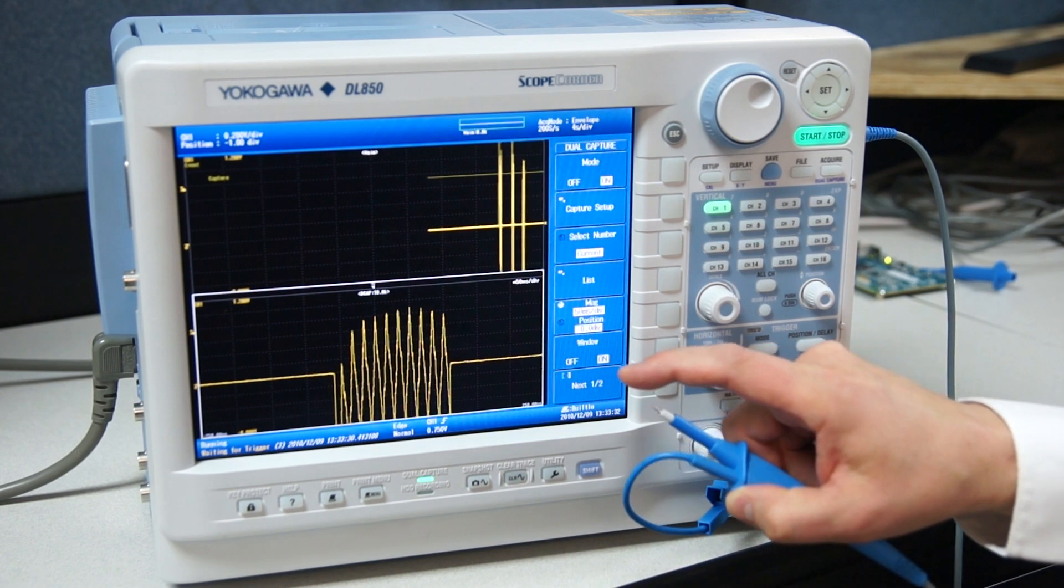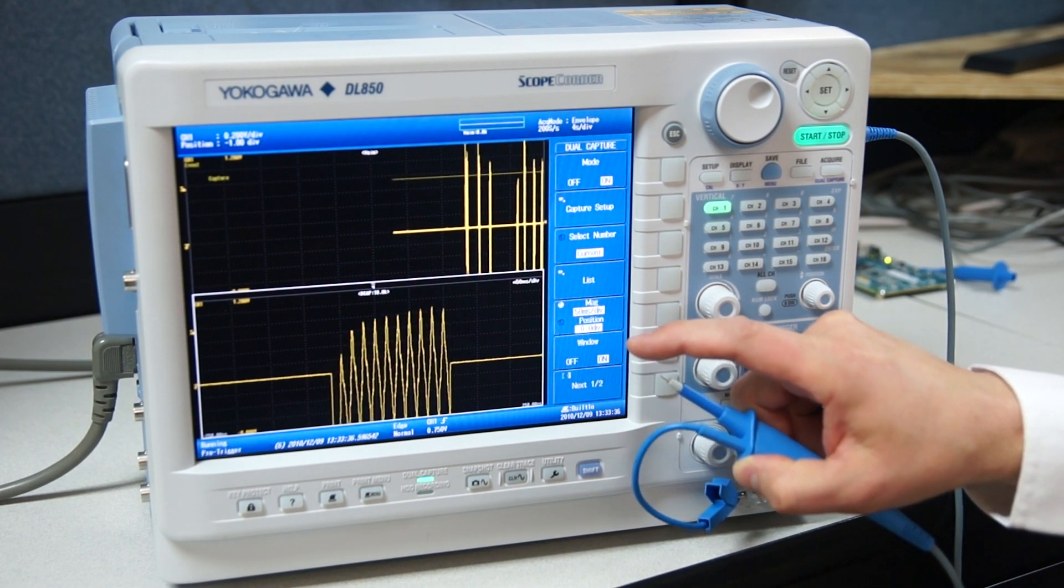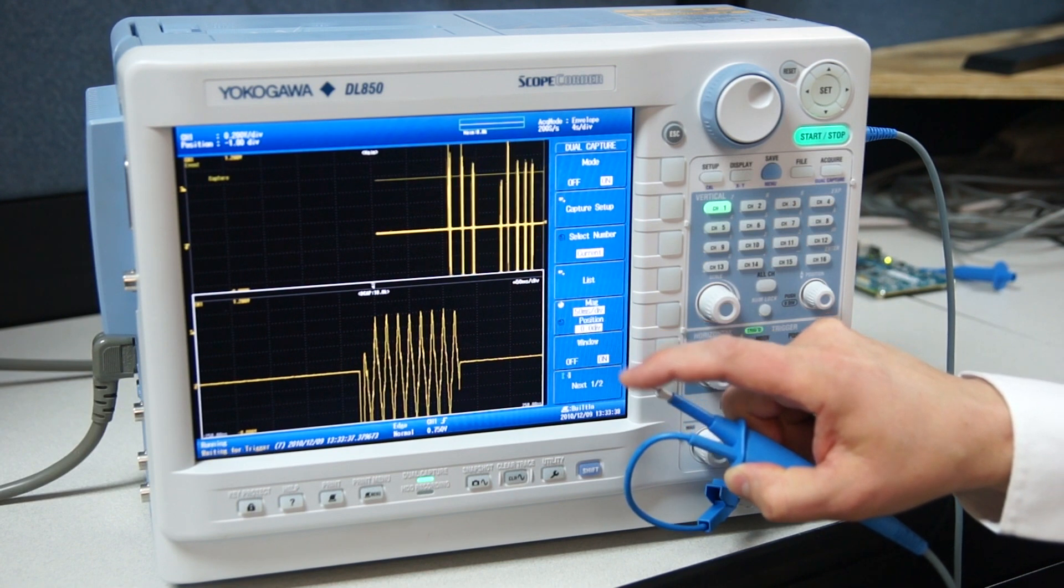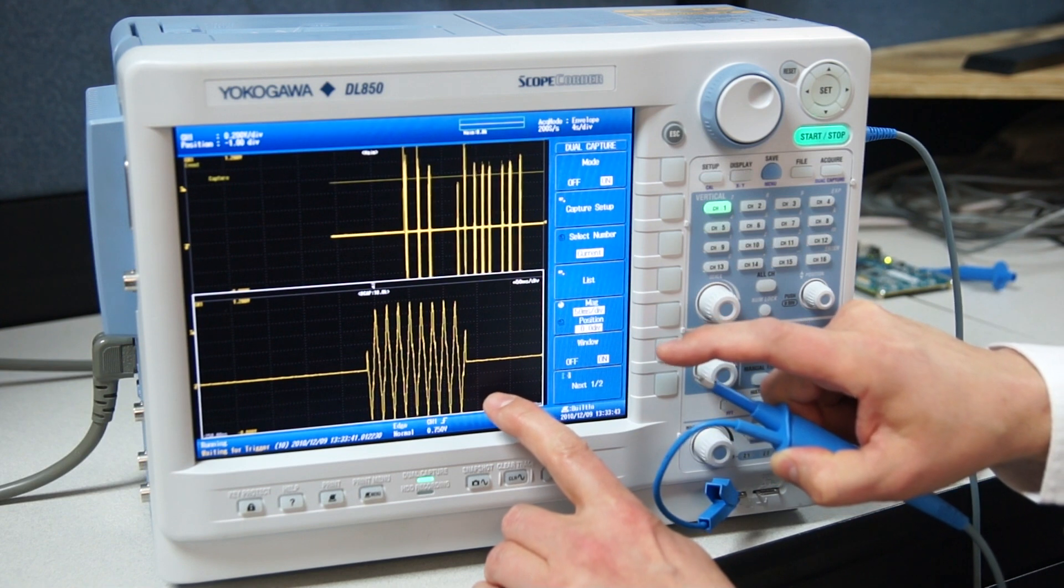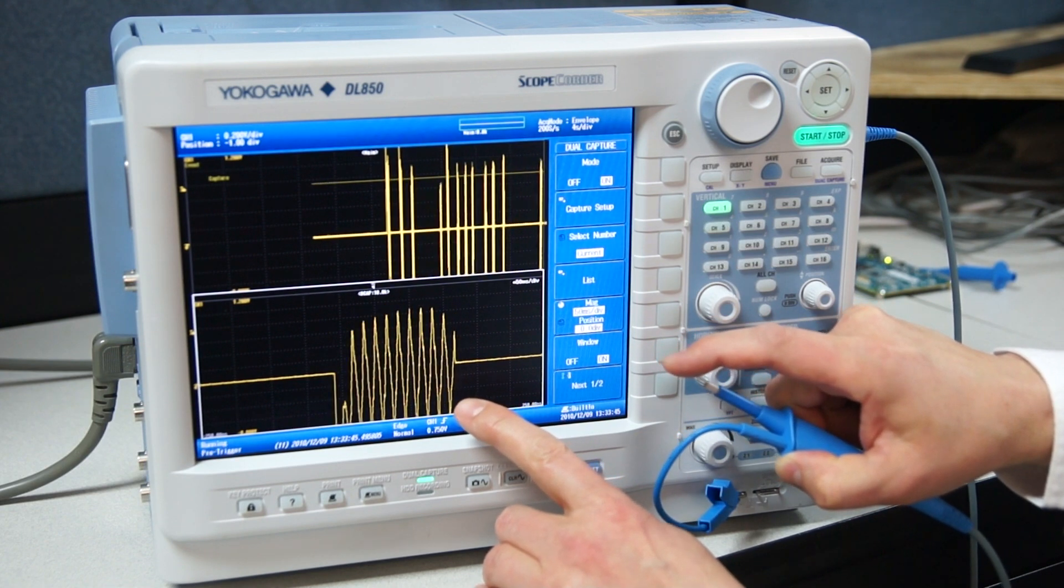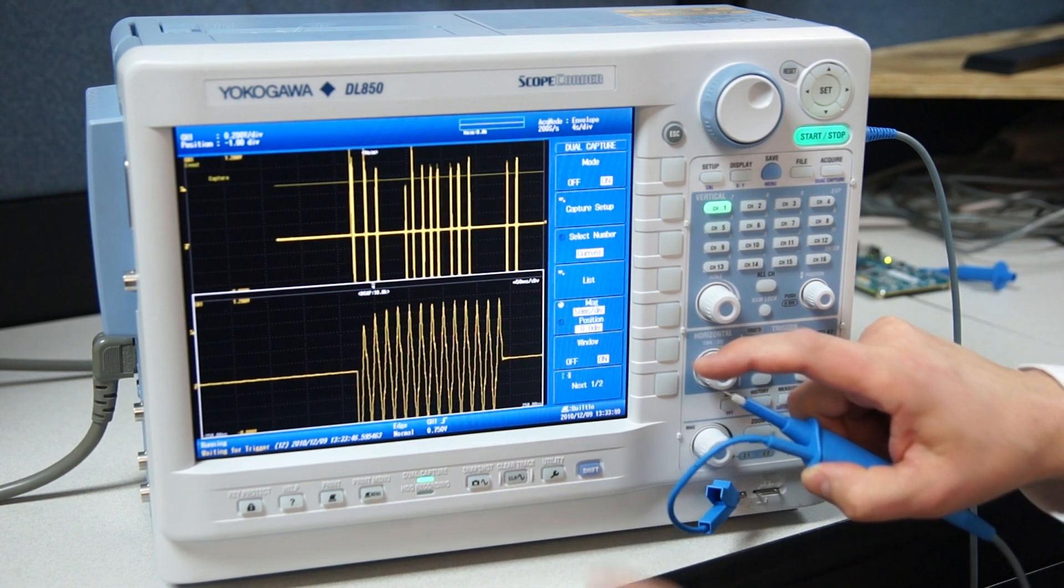In the lower waveform, you'll see a glitch that I am intentionally creating. You might imagine this to be a glitch on a servo line in your plant or on your product. The lower window is sampled at 100 mega samples per second, so it has tremendous waveform fidelity.